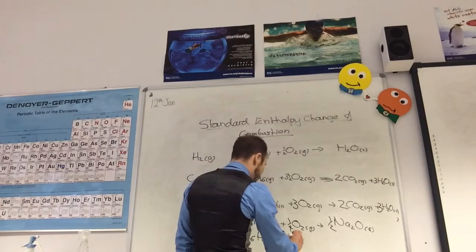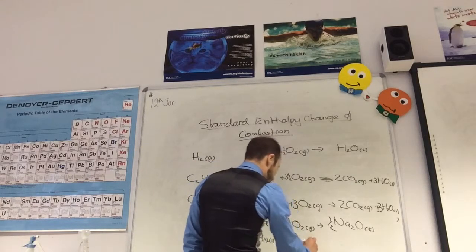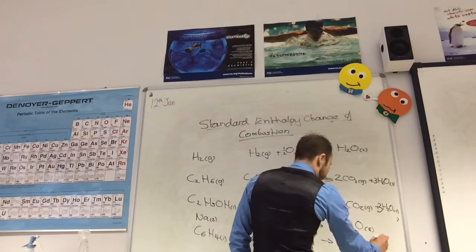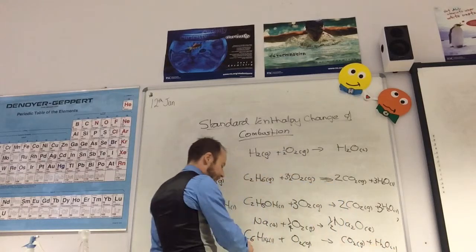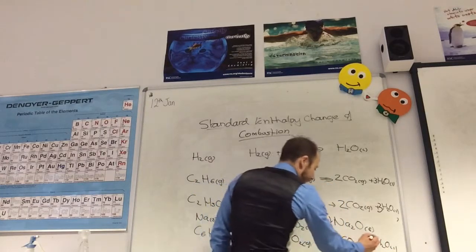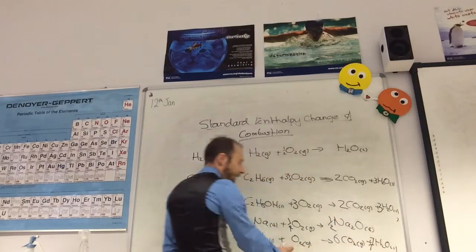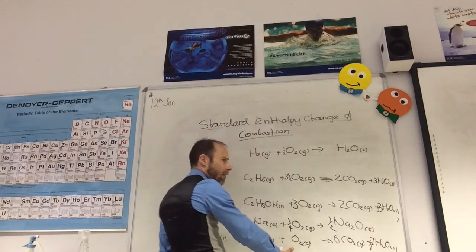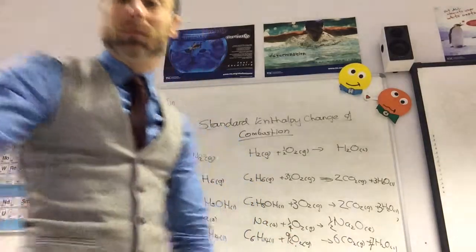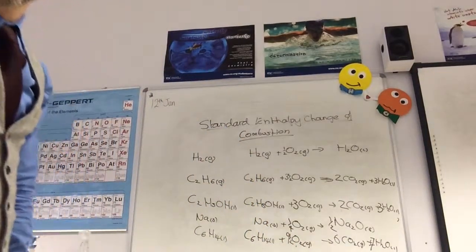And the final one. You're obviously going to make CO2 gas and H2O liquid. To balance this, you've got a six there, so you've got a six there. You've got fourteen there, so you need seven there. And how many O2s do you need? Nine and a half. Nine and a half O2s. Yep, cool. Okay, thank you.